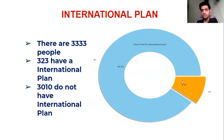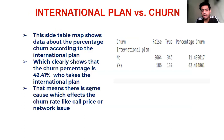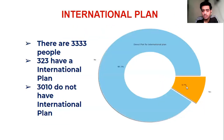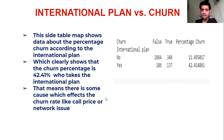For the international plan, 10% of customers have subscribed and 90% have not. Comparing the international plan with churn, the table clearly shows that of the 10% of customers who have the international plan, 42% are likely to churn. This indicates a serious problem with the international plan — likely due to network issues or high pricing — significantly affecting the telecom operator's churn rate.